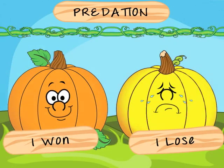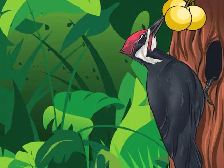Predation, simply put, happens when one species eats another. Most of us think of a lion preying on a deer as a common predator example. However, a bird chewing on a fruit is no less a predator than a lion. Predation is nature's way of transferring energy from the plants up to the various higher levels in the food chain.